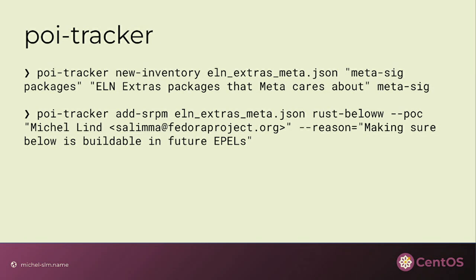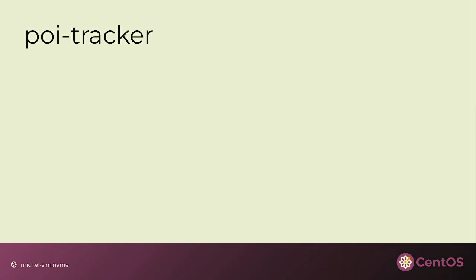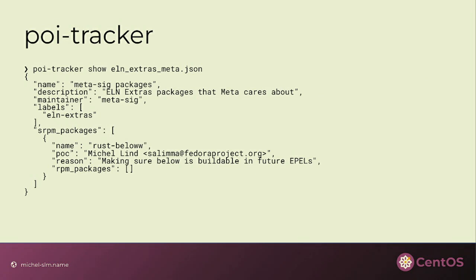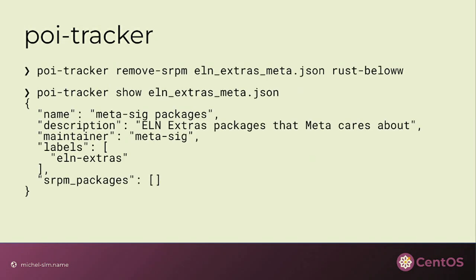That creates an inventory. Then you can say 'now I want to track this package.' Rust below is like ATOP — it's a resource monitoring tool. I want to declare myself as the person in charge of this package, and the reason I want to package this is to make sure that below can be built in EPEL. As you notice, there's a typo — below doesn't have two Ws. I had a mechanical keyboard that keeps repeating keys. So the file that it generates has a typo, and you can just say 'let's remove below from that list because I mistyped it.' When you show the configuration, you can see it's gone, and then we can add it correctly.